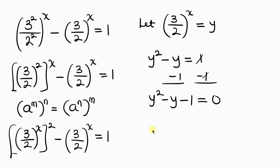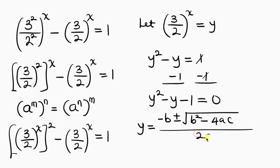Because of that, we're going to use the quadratic formula to solve this. Since we're looking for y, the formula is: y equals negative b plus or minus the square root of b squared minus 4ac, all over 2a. Our a is the coefficient of y squared, which is 1. Our b is the coefficient of y, which is negative 1. And our c is the constant term, negative 1.